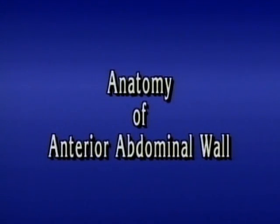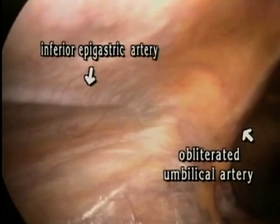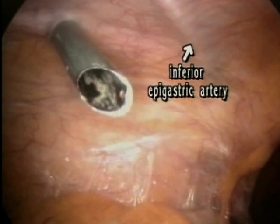Laparoscopy provides a unique opportunity to view pelvic organ anatomy. During any laparoscopic surgery, inspection of the anterior abdominal wall is a prerequisite for safe insertion of the trocars. The important anatomic landmarks are the obliterated umbilical artery and the inferior epigastric artery. A palpating finger exposes these structures and precisely localizes the trocar entry site lateral to the vessels.